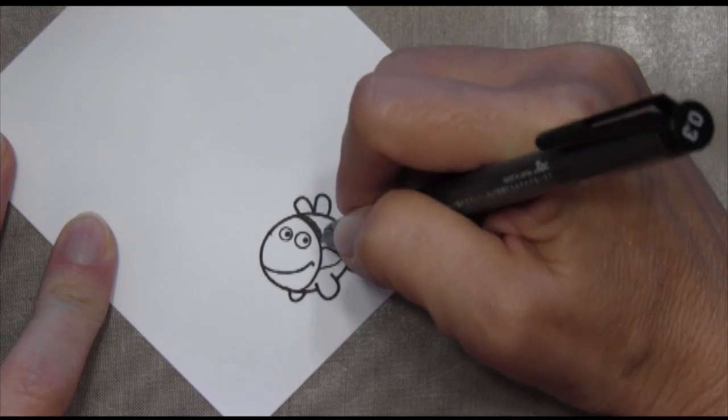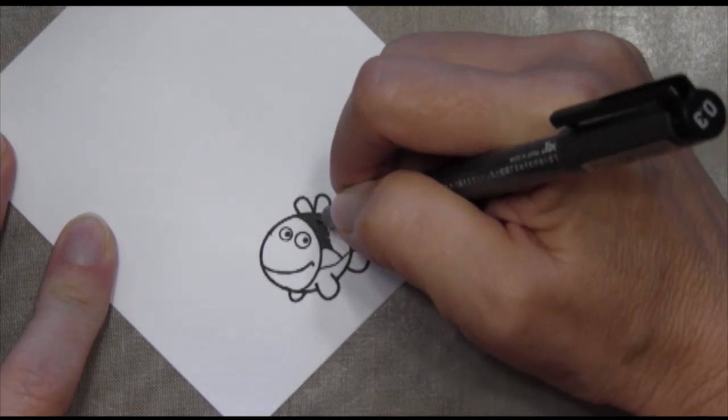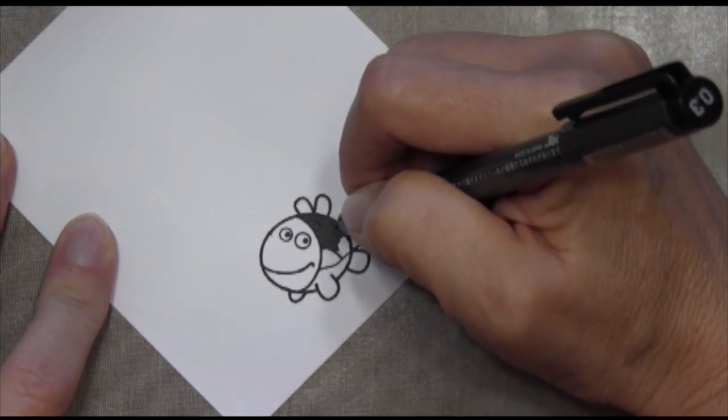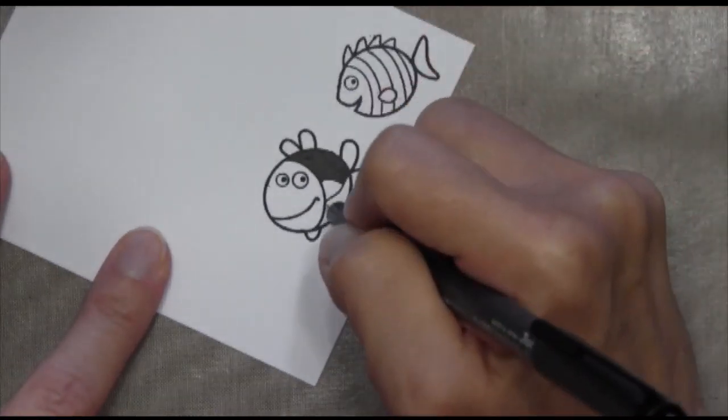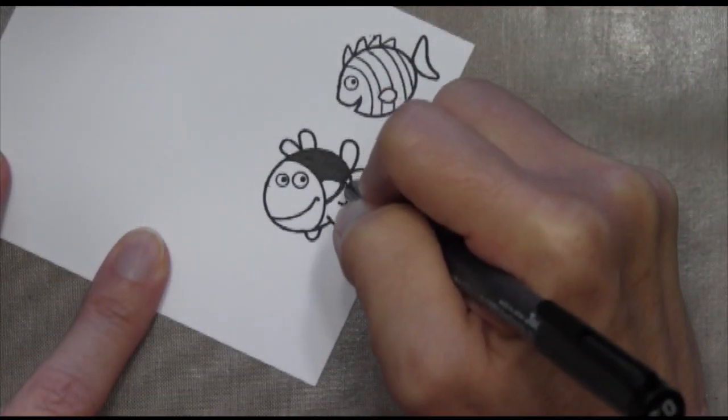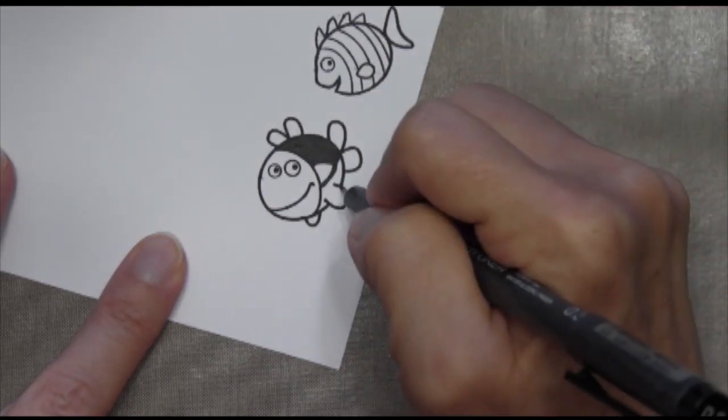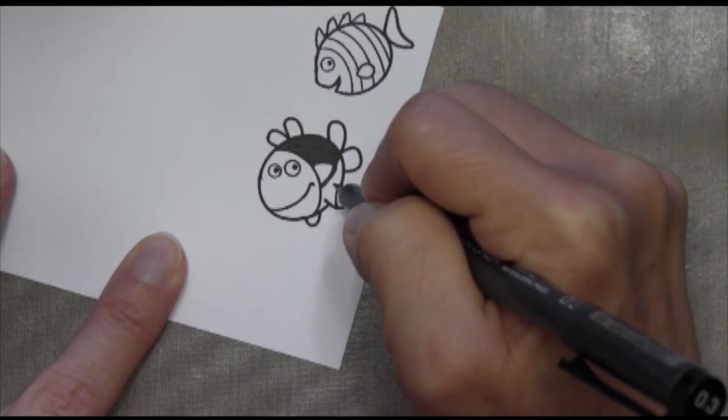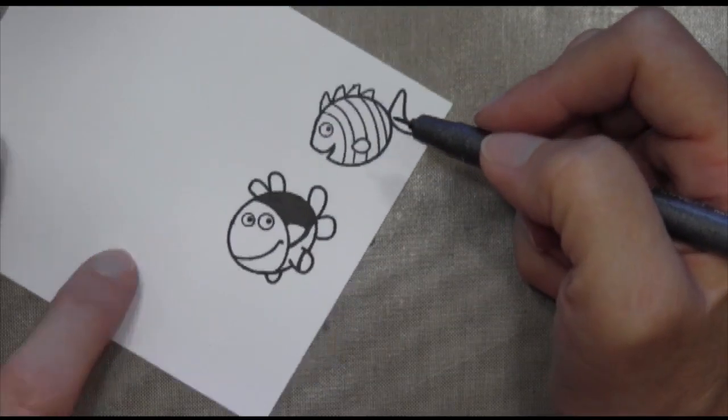Now this is a Copic multiliner. It's 0.3 and it comes in a pack of four. And I'm creating lines to resemble Dory from Nemo, Finding Nemo. So that's kind of where my sentiment, when I saw these fish, I'm like, oh my gosh, I have to do that.